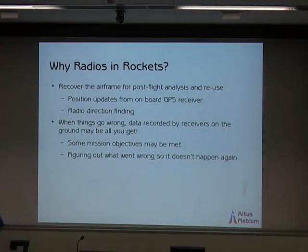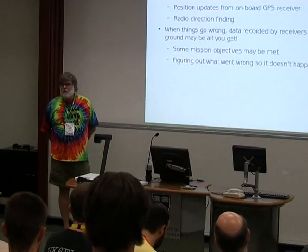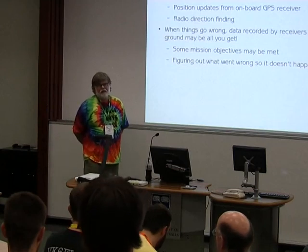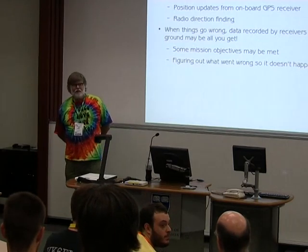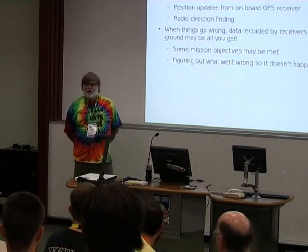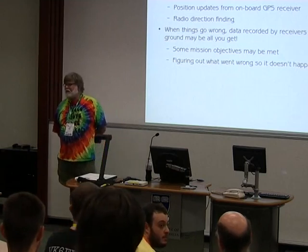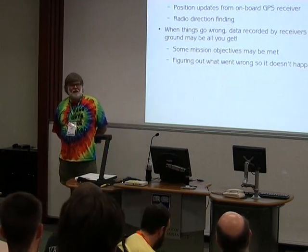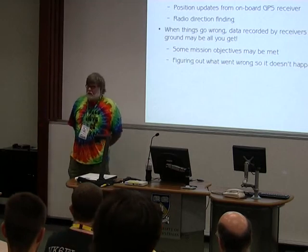Sometimes, depending on the topography where the airframe lands, we still use traditional radio direction finding techniques — going out with directional antennas to find where the signal is strongest. In Colorado this often happens because there are small canyons adjacent to some of our launch sites, and on a bad day you end up down in the canyon figuring out which branch the airframe is in. In eastern Oregon, it's all about which sagebrush the rabbits pulled your airframe under to hide it. And when things go wrong — when you don't have a nominal parachute deployment and the airframe slams the ground at ridiculous speed — the data recorded by receivers on the ground may be all that you get.